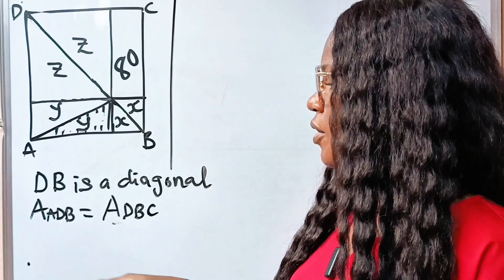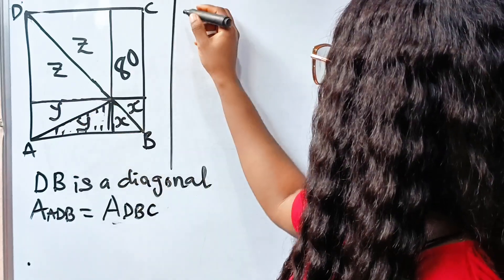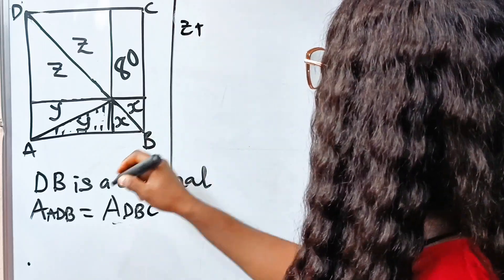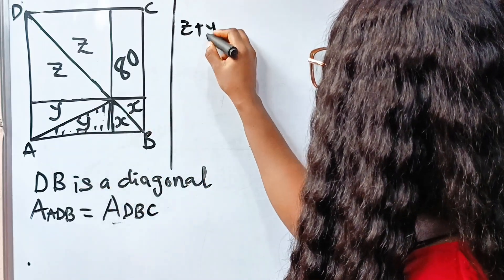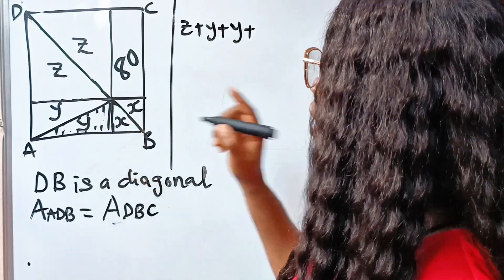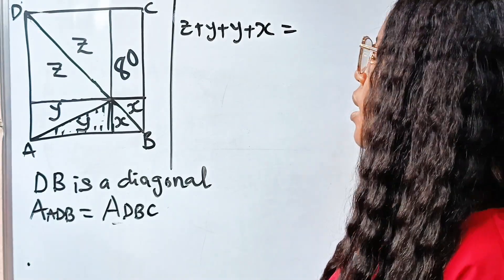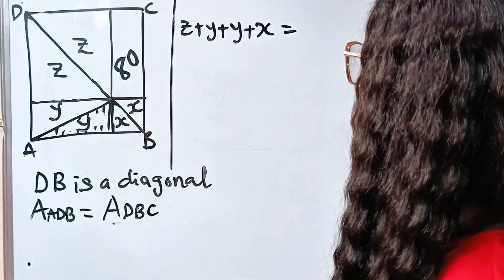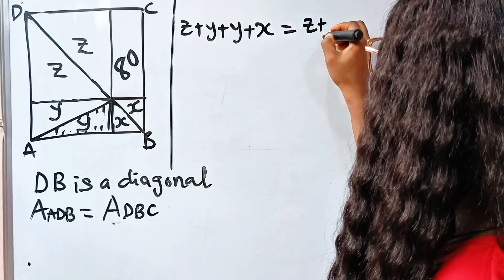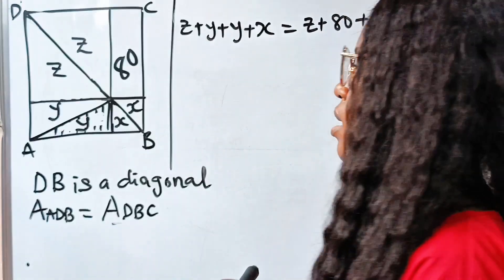The area of triangle ADB is z plus y plus y plus x, and this should be equal to the area of triangle DBC, which is z plus HC plus x.